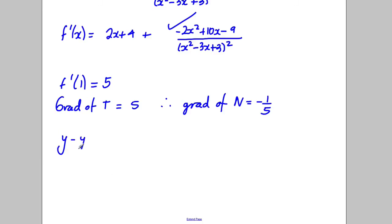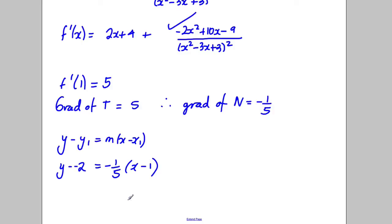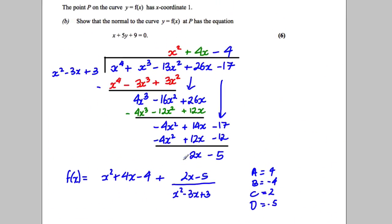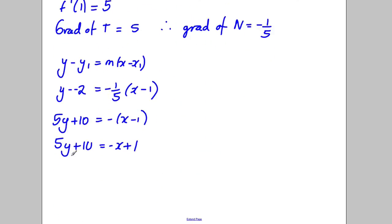Using y − y₁ = m(x − x₁): y − (−2) = −(1/5)(x − 1). Multiply everything by 5: 5y + 10 = −x + 1. So 5y + 10 = −x + 1. Adding x to both sides and subtracting 1: x + 5y + 9 = 0, as required.